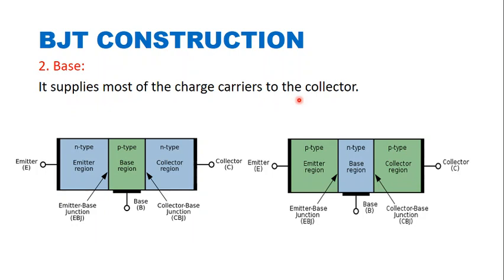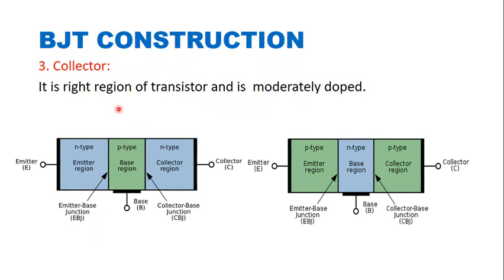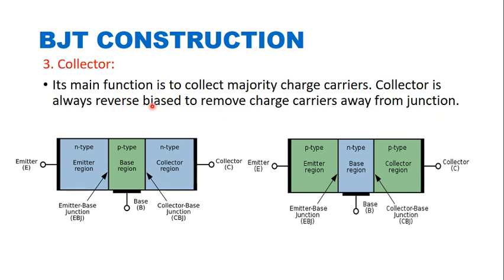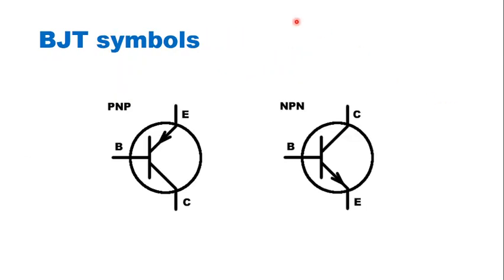The third region is the collector region. It is the right region of the transistor and is moderately doped — meaning the doping level is between that of the emitter region and the base region. The collector's main function is to collect majority charge carriers coming from the emitter region through the base region. The collector is always reverse biased to remove charge carriers away from the junction.